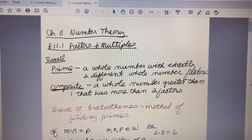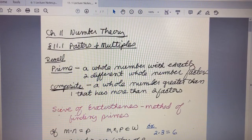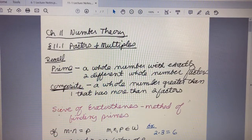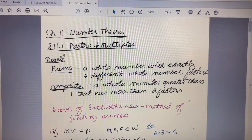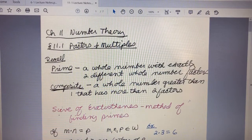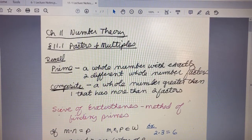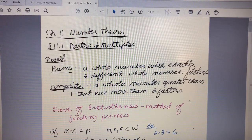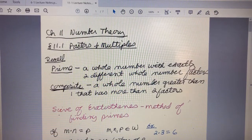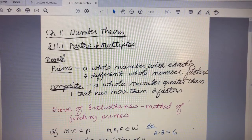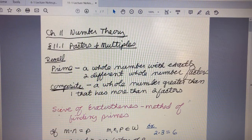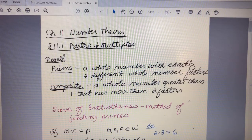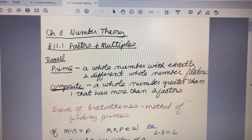Okay, our last chapter is Chapter 11, which is on number theory. Section 11.1 starts with factors and multiples. Remember, a prime number is any whole number with exactly two different whole number factors. For example, 5 is a prime number because the only two factors of 5 are 1 and 5. A composite number is a whole number greater than one that has more than two factors.